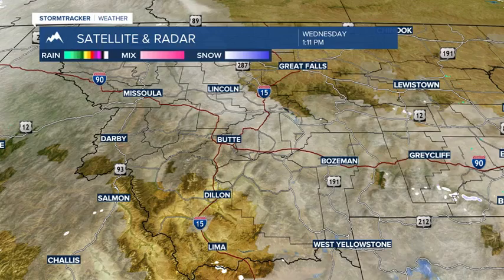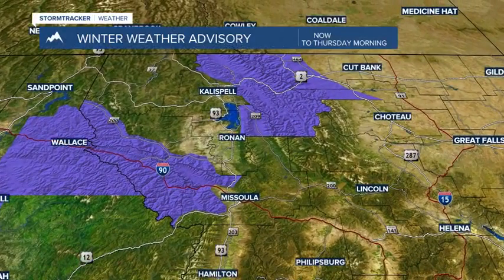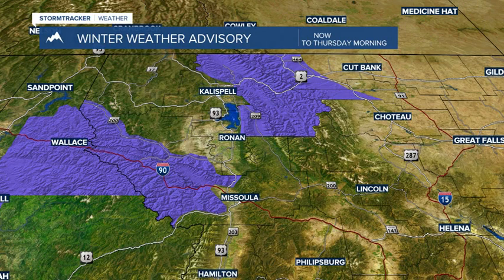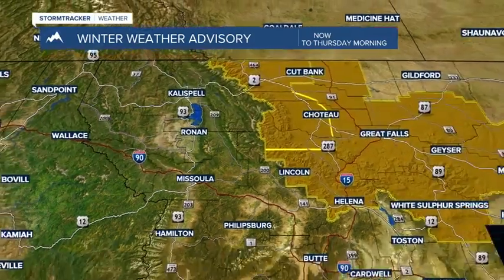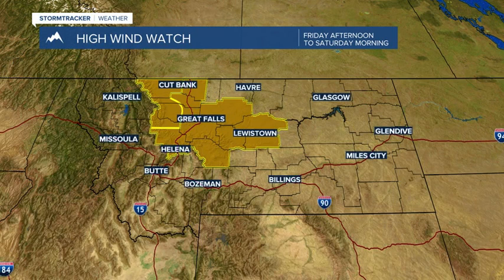It's turning out to be a milder afternoon, but travel impacts are mainly confined to far northwestern Montana around Glacier National Park. Lookout Pass between Missoula and Wallace, Idaho — I-90 could see around two to five inches of snow. There are some advisories out tonight into early tomorrow morning.